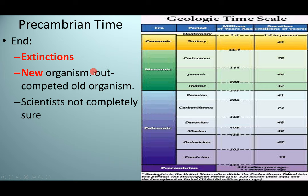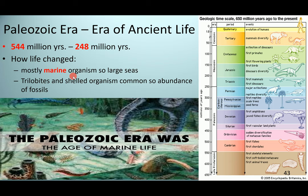The Precambrian ended with some type of extinction — we're not completely sure what caused it since it was so long ago. Some sort of extinction occurred, and then new organisms outcompeted the old ones. The Paleozoic era, known as the era of ancient life, spans from 544 million years ago to 248 million years ago. Life was mostly marine organisms, with trilobites and shelled organisms being very common.